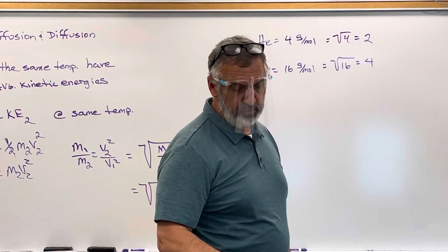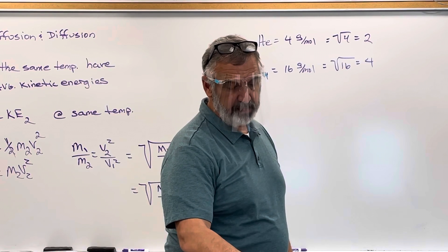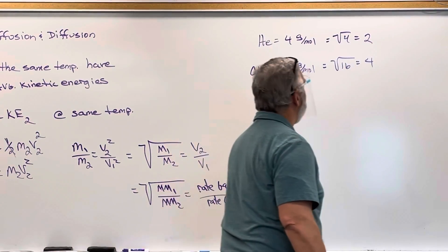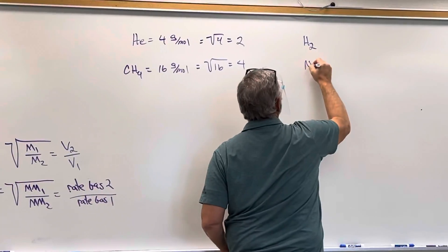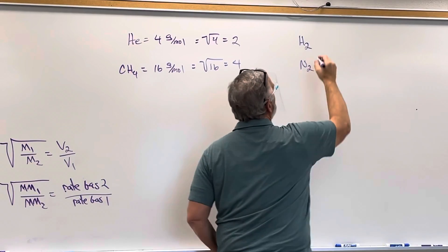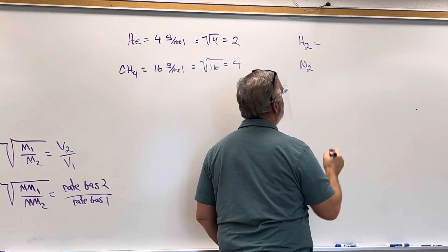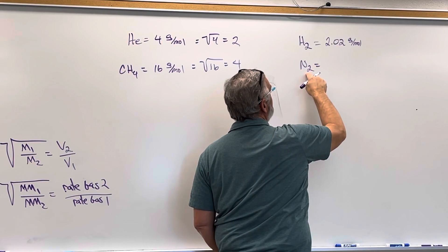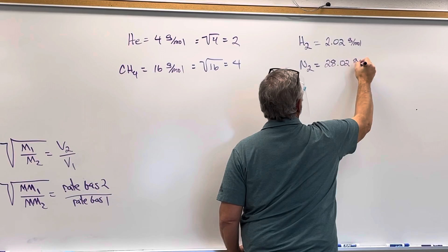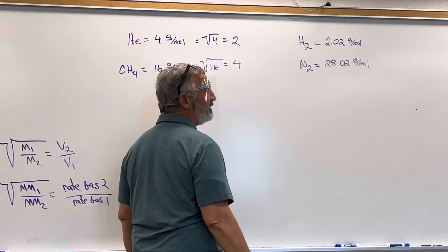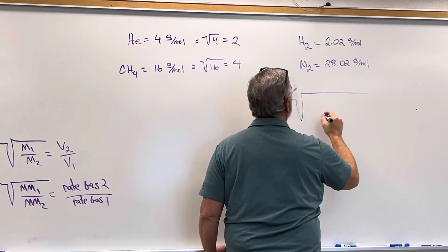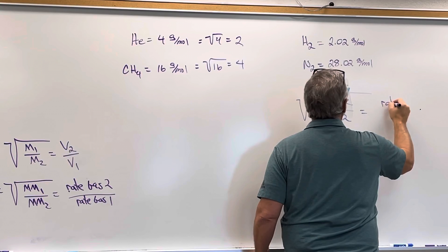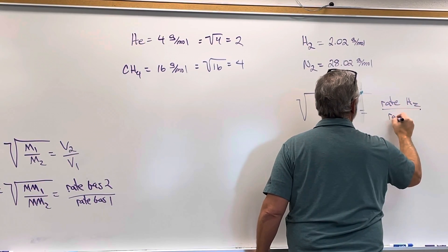Question number 56 says quantitatively compare rates of effusion for the following pairs of gases at the same temperature and pressure: hydrogen and nitrogen. Hydrogen H2, nitrogen N2. Comparing the rates. What's the molar mass of hydrogen? 1.01, so this is going to be 2.02 grams per mole. Nitrogen is 14.01, so it's 28.02 grams per mole. So to compare, we just say the square root, and I'm going to go 28 over 2 is equal to the rate of hydrogen compared to the rate of nitrogen.